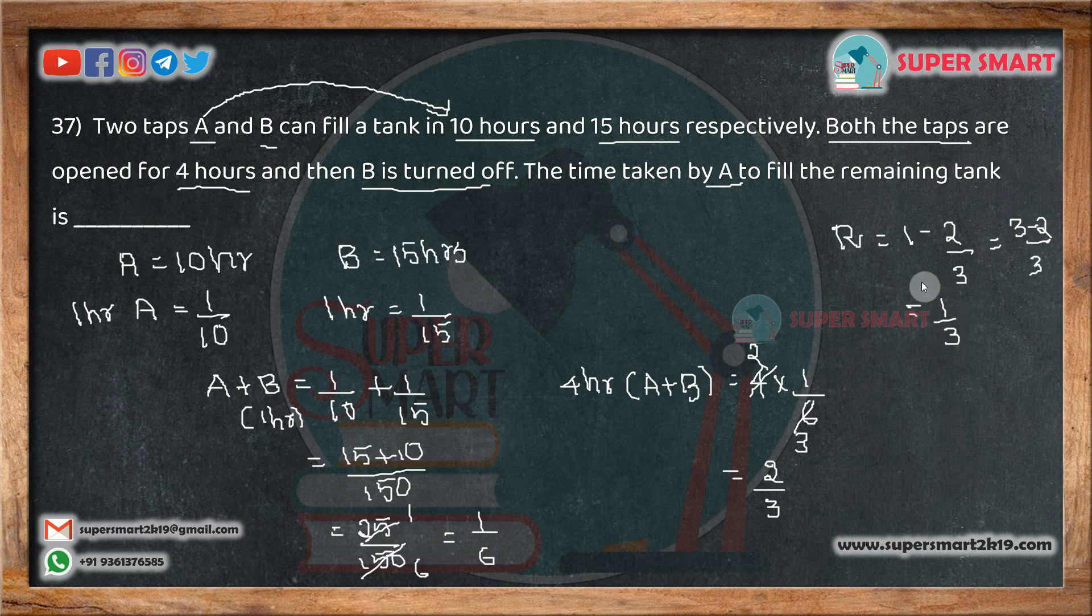We know the remaining part, A has to complete 1 by 3. We will complete the part with A alone. If one tank, 1 by 3 part of the tank is remaining. We divide 1 by 3 by the rate of A. The remaining tank takes 10 by 3 hours. If you have 10 by 3 hours or time, you will be complete.